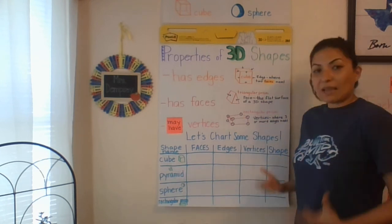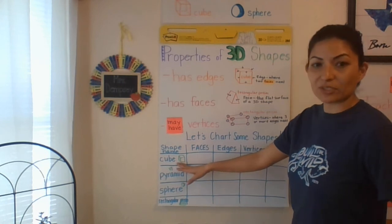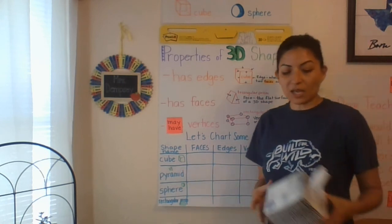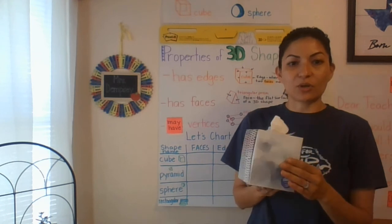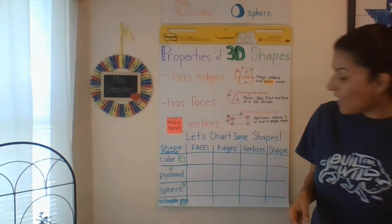But what you're going to do is you're going to use everyday objects around your house. So for instance, I have my first shape would be a cube. A great example of a cube would be our Kleenex box that I use often.